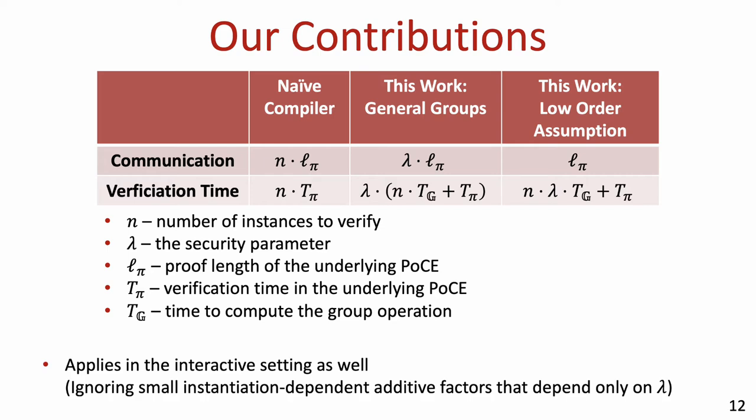It should be mentioned that VDF proofs for repeated squaring are typically obtained by applying the Fiat-Shamir heuristic to an interactive protocol. If one doesn't want to assume the soundness of Fiat-Shamir, our compilers can be instantiated as an additional message to the underlying interactive protocol. In this case, the communication complexity and verification time are essentially those listed in the table.